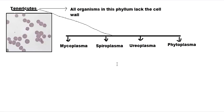Welcome to the video on Tenericutes. The word Tenericutes contains two parts: 'Teneri' meaning tender or soft, and 'cutes' meaning skin. The skin of a bacterium refers to its outer membranes. So 'tender skin' means that all organisms in this phylum lack the cell wall. Important genera include Mycoplasma, Spiroplasma, Ureaplasma, and Phytoplasma — all lack the cell wall and have only the cell membrane outside them.